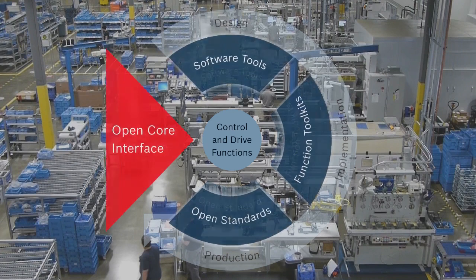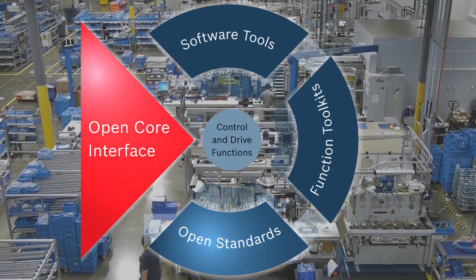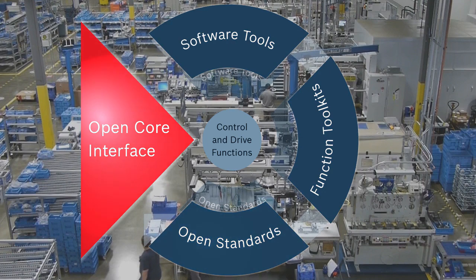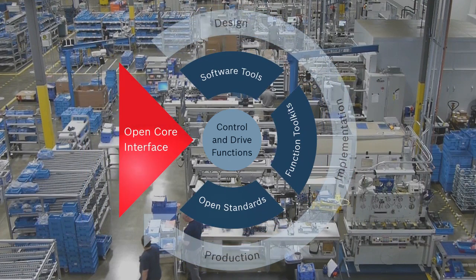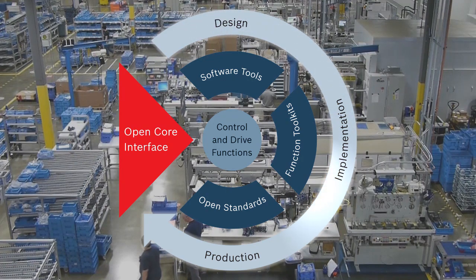If we explode out one ring, we look at software tools and function toolkits, open standards, and the OpenCore interface. The outer ring describes the lifecycle of a machine. We try to present and provide solutions in the design phase of a machine, in the implementation and commissioning of machines, solutions for production, and then even into the service of the machine.